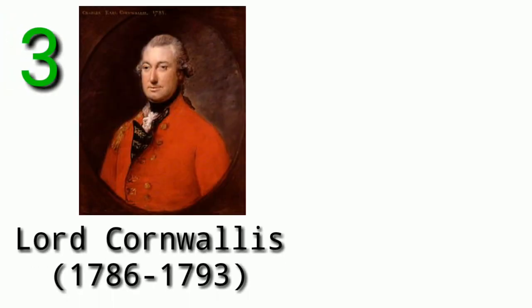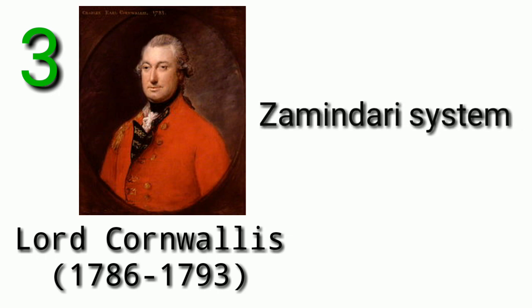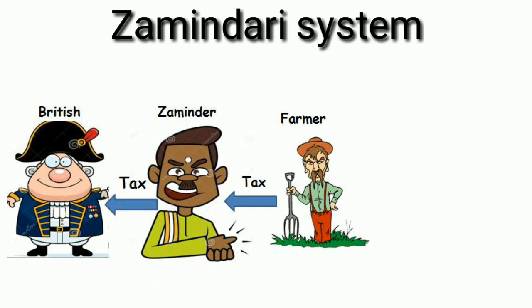Then Lord Cornwallis, one of the famous Governor Generals of Bengal, who introduced the Zamindari system in India. Under this system, the East India Company issued tenders to zamindars for land revenue collection.